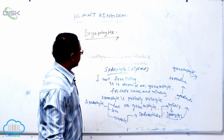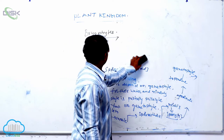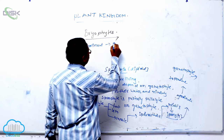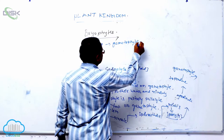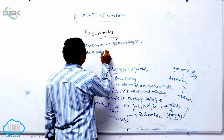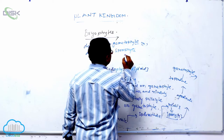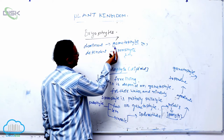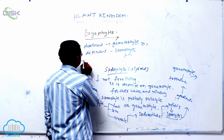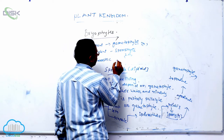This shows alternation of generations. In this alternation of generations, the dominant phase is the gametophyte, and the dependent phase is the sporophyte. The gametophyte is haploid and the sporophyte is diploid. Since they are morphologically different, this is known as heteromorphic alternation of generations.